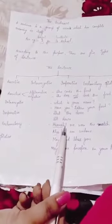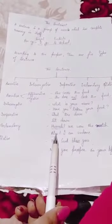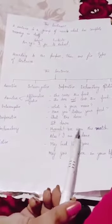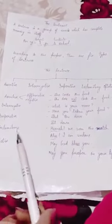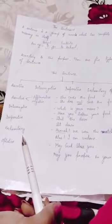The words hurrah, alas, these are interjections. For example, hurrah, we won the match. Alas, I am undone. These two sentences are the examples of exclamatory sentences.